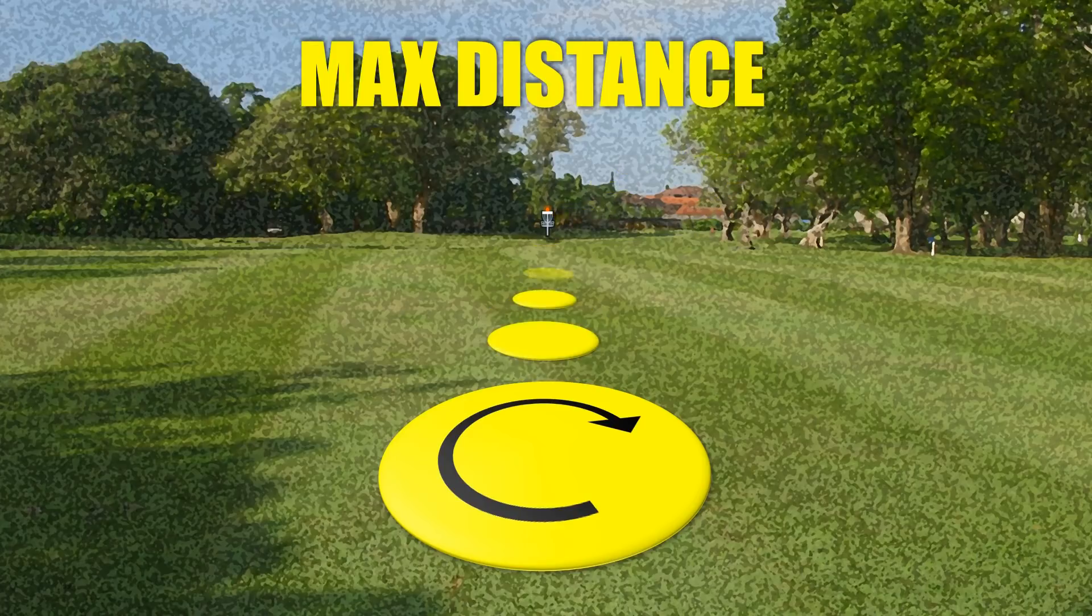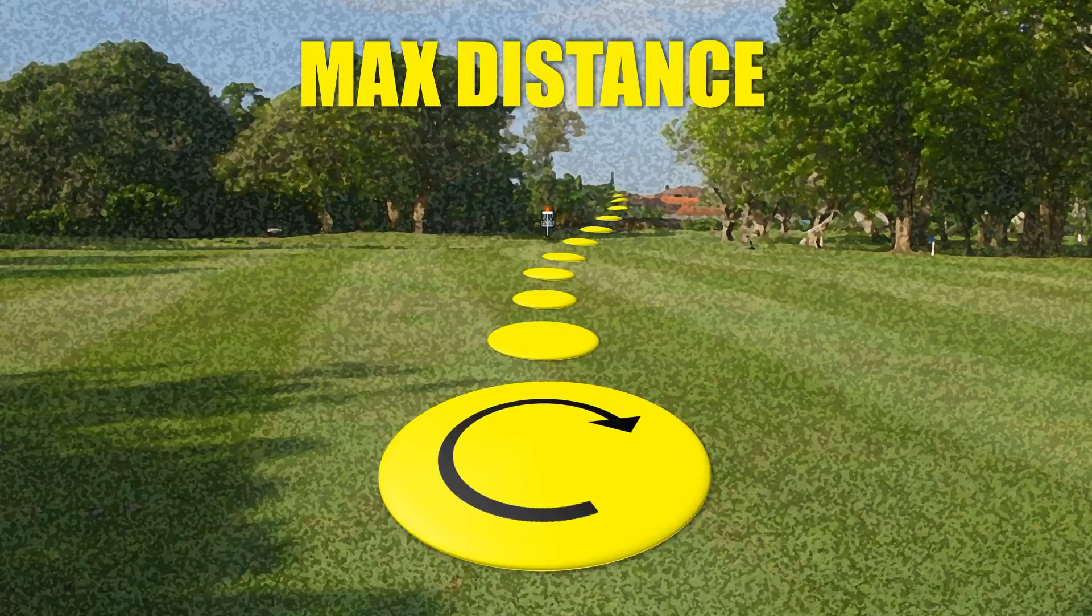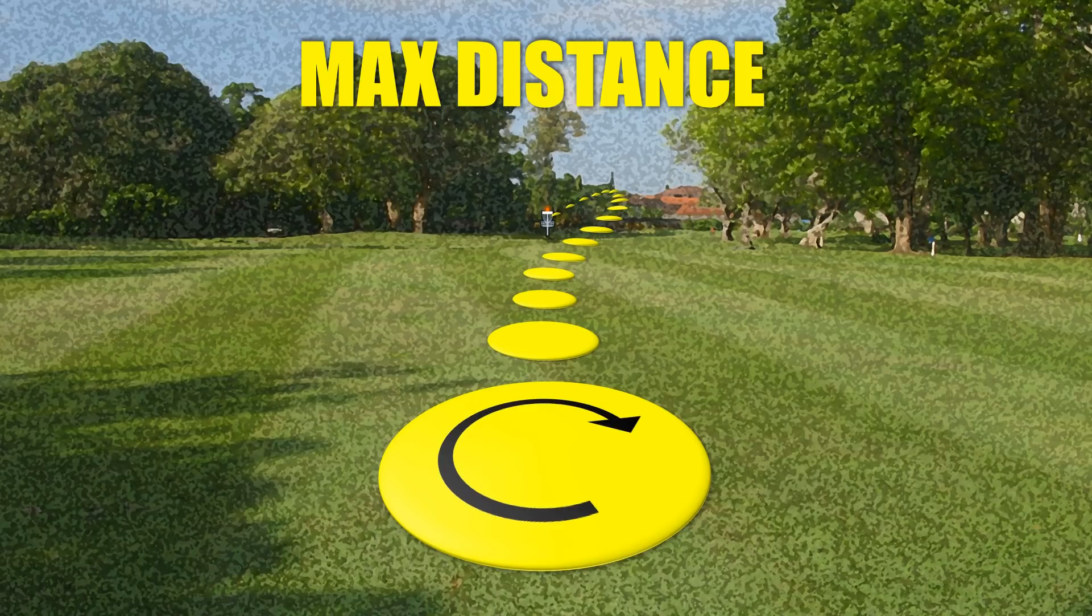Thirdly we have the max distance flight pattern. In this flight pattern the disc will turn over gently before fading back to the left resulting in a long floating net straight flight.